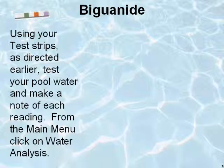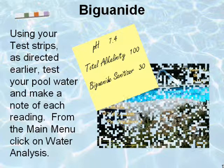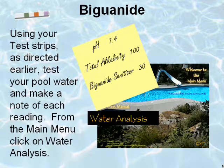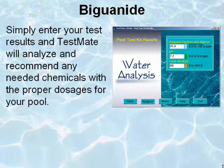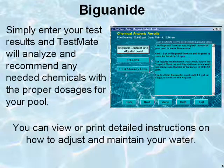Using your test strips as directed earlier, test your pool water and make a note of each reading. From the main menu, click on Water Analysis. Simply enter your test results and TestMate will analyze and recommend any needed chemicals with the proper dosages for your pool. You can view or print detailed instructions on how to adjust and maintain your water.